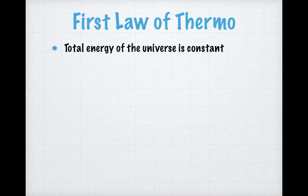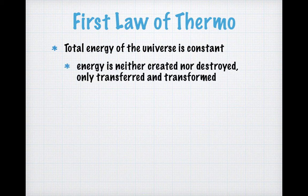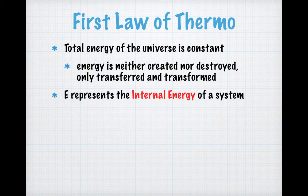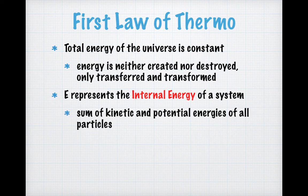In the first law of thermodynamics, the total energy of the universe is constant. Energy is neither created nor destroyed — it can only be transferred from one object to another or transformed from one form to another, and one of these forms includes mass. We use the symbol E to represent the internal energy of a system, which is the sum of all the kinetic and potential energies of all the particles in a system. This is not particularly easy to calculate; it's much more conceptual.